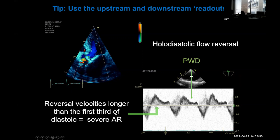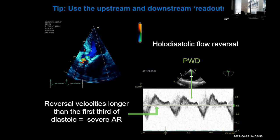If the diastolic flow reversal extends beyond the first third of diastole, it's severe AR. This correlates with clinical exam findings — you might see this more than Quincke's sign because nobody takes pulses properly anymore.